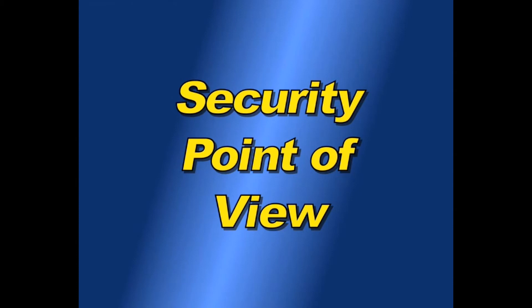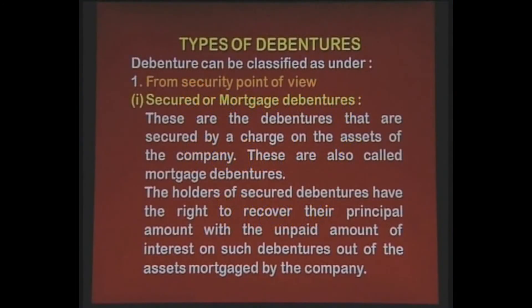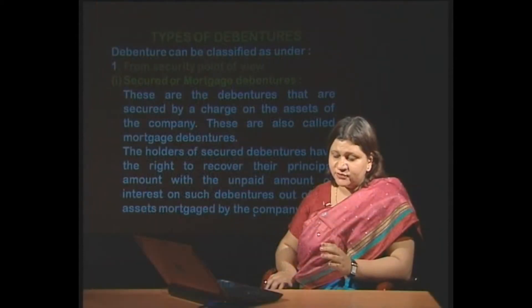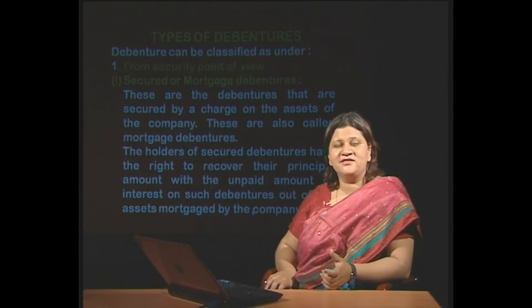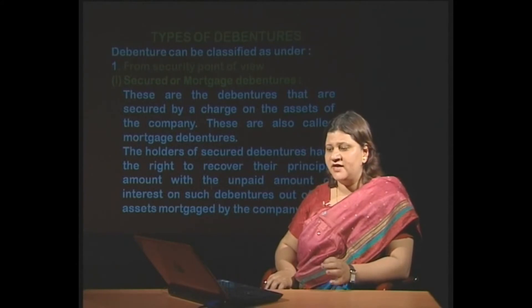First, debentures being classified from a security point of view. The first category is secured or mortgage debentures. These are the debentures that are secured by a charge on the assets of the company; these are called mortgage debentures. The holder of secured debentures has the right to recover the principal amount with the unpaid amount of interest on such debentures out of the asset mortgaged by the company. Here, we are securing the portion of the debentures by the asset — there is an asset backing.